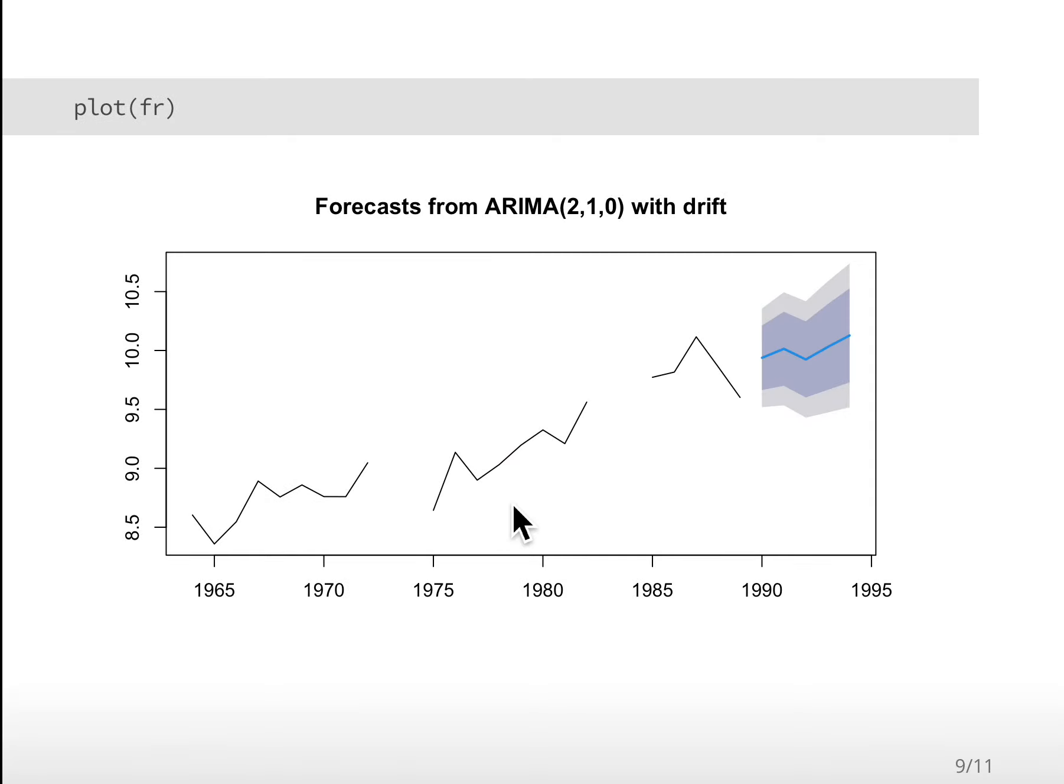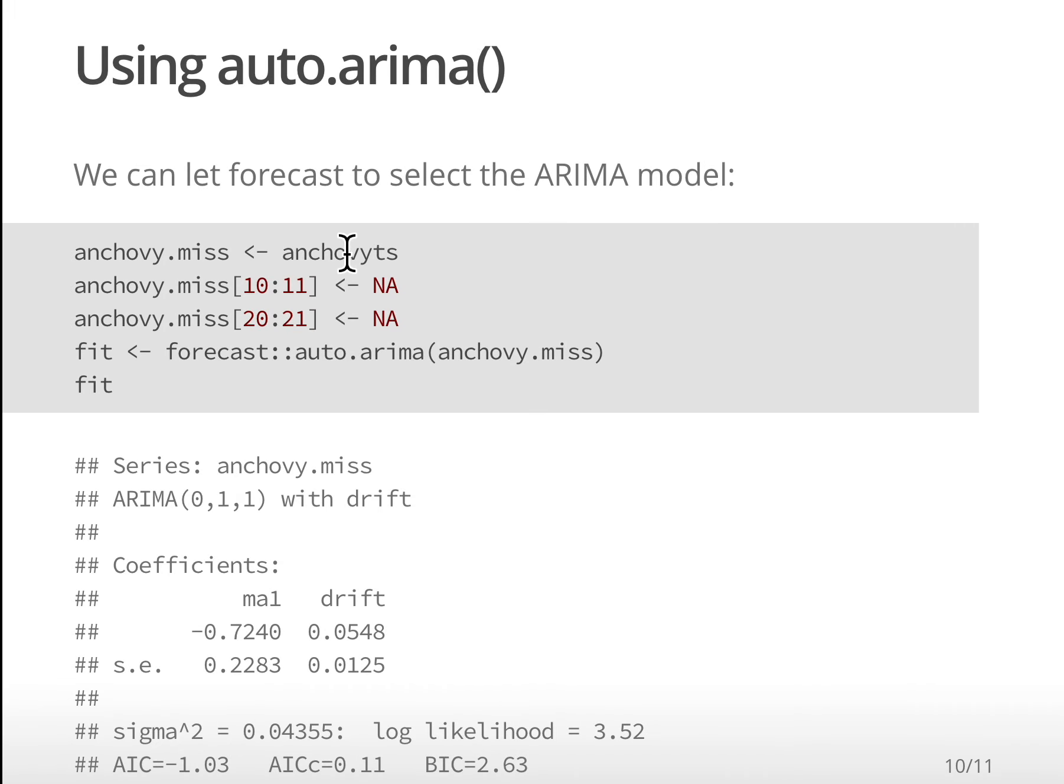Now in this case, I told it what model I wanted to use. What if we wanted to have auto.arima choose it? This is the code you would use. Interestingly, with this missing data added, what is it choosing? One difference and then with a moving average here. This part is saying that the error is autocorrelated - those E terms are autocorrelated. And we have drift.